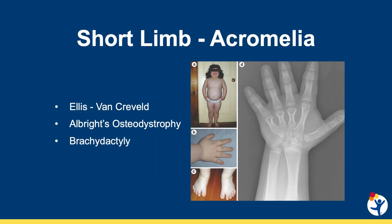Finally, the least common form of dwarfism is acromelic short-limb disorders. Ellis-van Creveld disorder, Albright's osteodystrophy, and brachydactyly are all primarily manifested in growth of the hands and the feet.